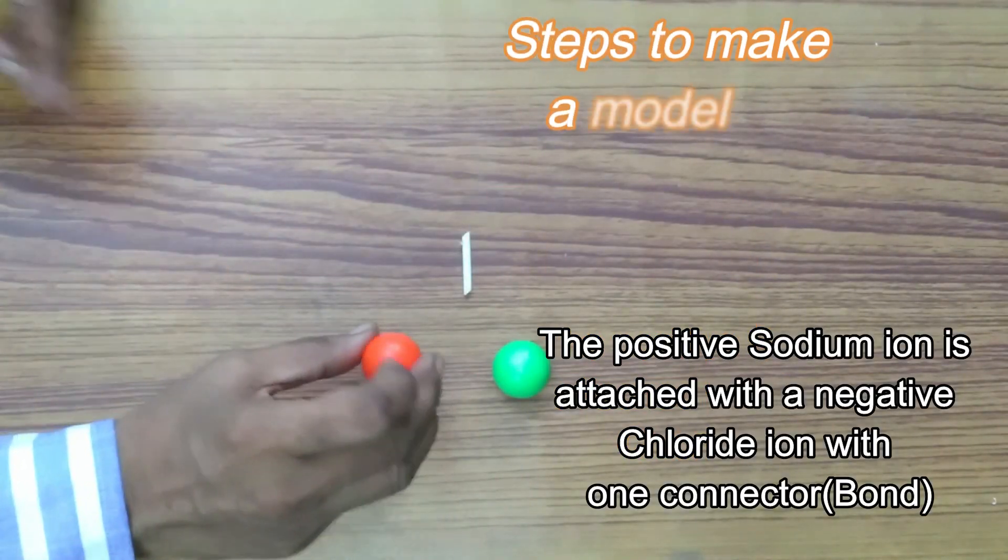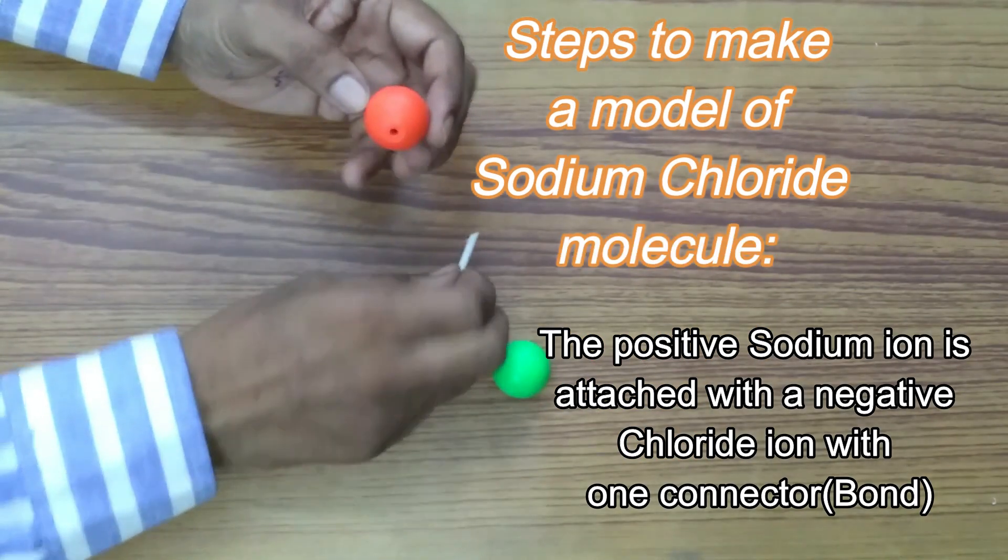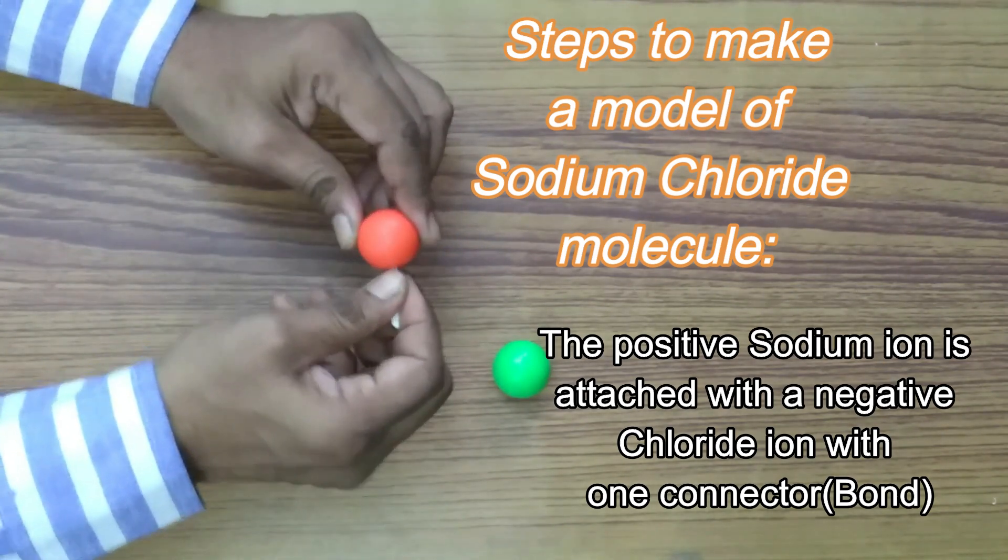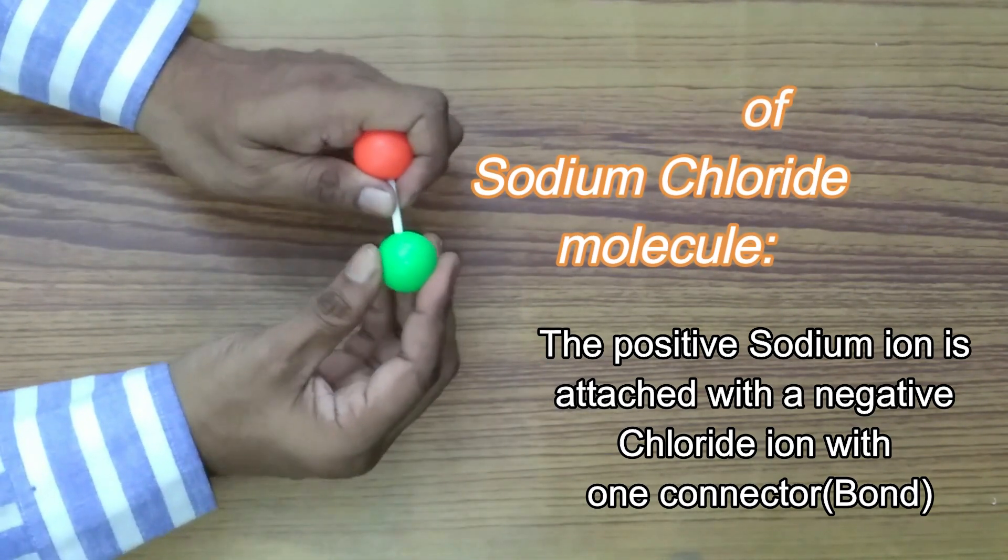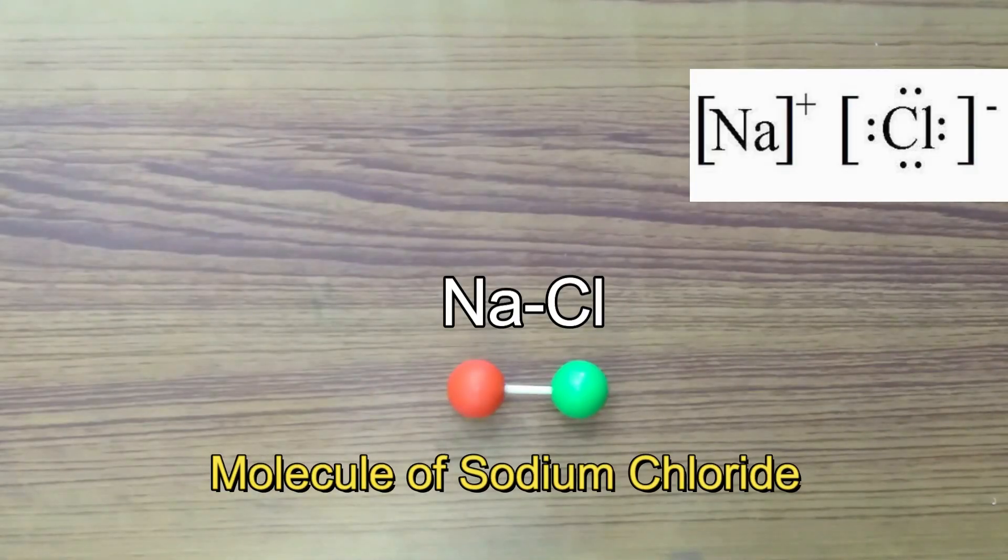In the formation of sodium chloride molecule we take this as a sodium metal we attach one connector to the positive end and another connected to the negative end and the sodium chloride molecule is formed.